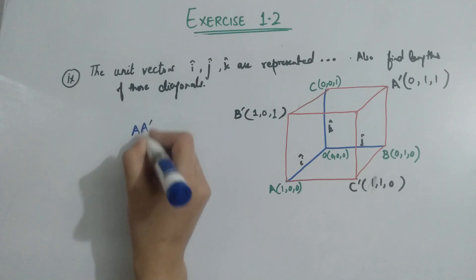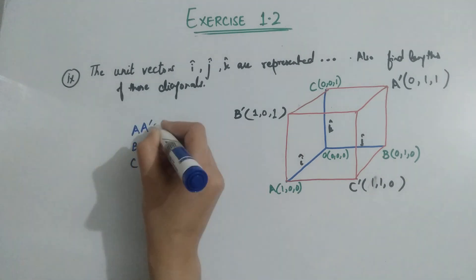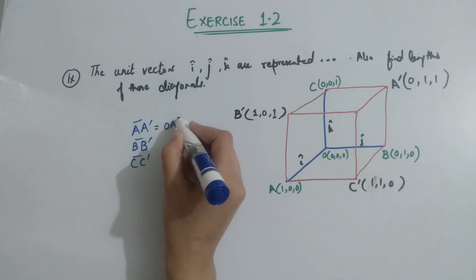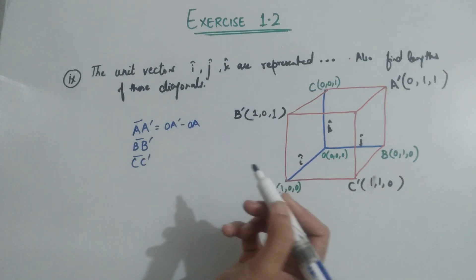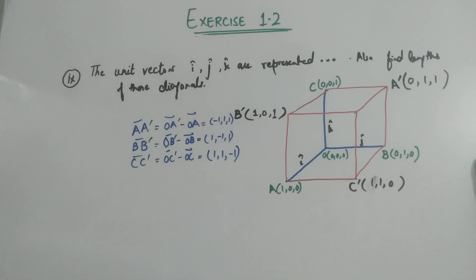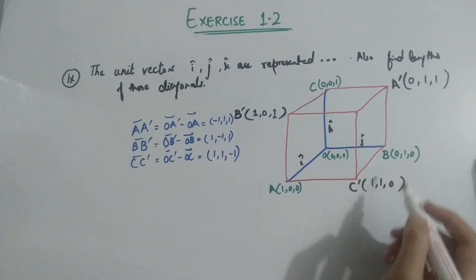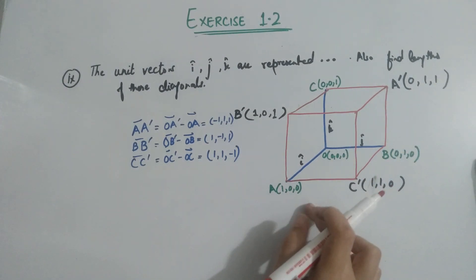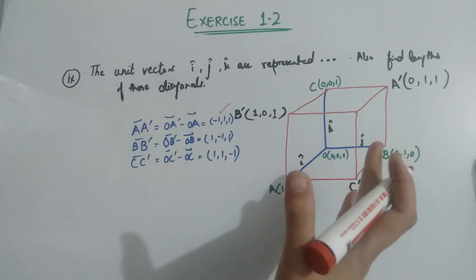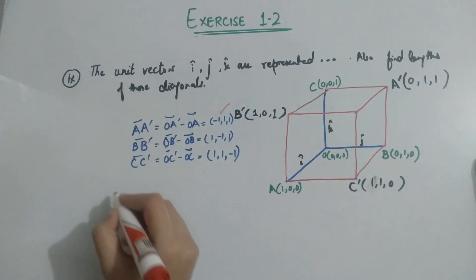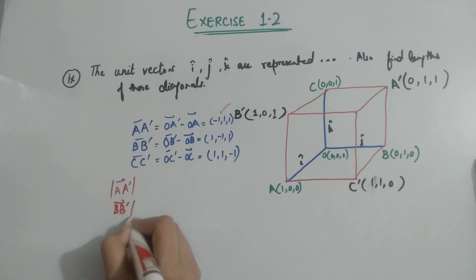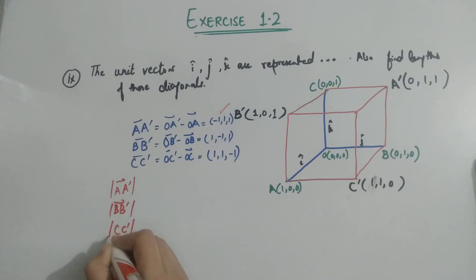OA-prime minus OA gives diagonal AA-prime, and similarly for the second and third diagonals. After putting values of A-prime (0, 1, 1) minus A (1, 1, 1), you get the diagonal vector. Then find the magnitudes: the length of AA-prime, BB-prime, and CC-prime.